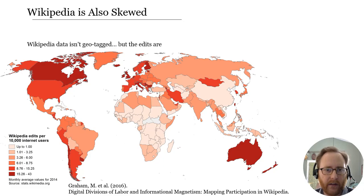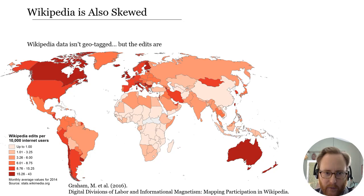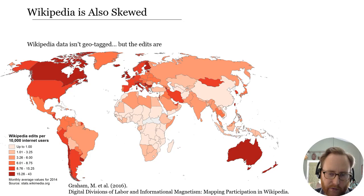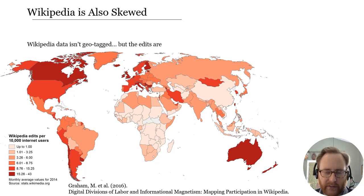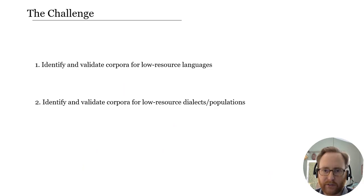Beyond web data and social media, a big source of data is Wikipedia. Because many people contribute to Wikipedia articles, we don't have this kind of geo-referencing, but there has been work on identifying where people editing Wikipedia are located. We see a strong geographic bias where some places contribute a lot more — and this is even relative to internet users. One issue is that many parts of the world have a relatively low percentage of population with internet access, and even controlling for different levels of access, all the sources we typically use are skewed towards certain populations.